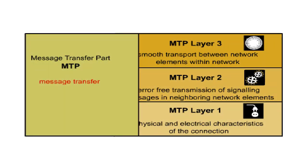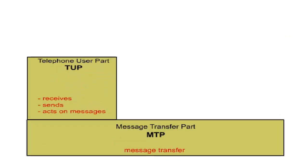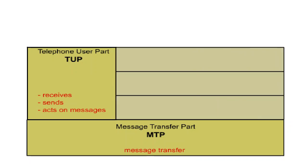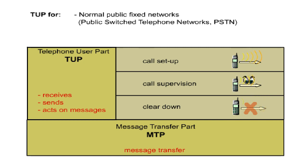While MTP is responsible for message transfer, the Telephone User Part, TUP, represents the protocol used for sending, receiving and acting on these messages from the user's point of view. TUP handles call setup, call supervision, and clear down, and exists for normal public fixed networks, also known as public switch telephone networks, or PSTN. With the introduction of the more capable ISDN network, some extra sets of messages became necessary. These features are contained in the ISUP, which replaces the TUP.